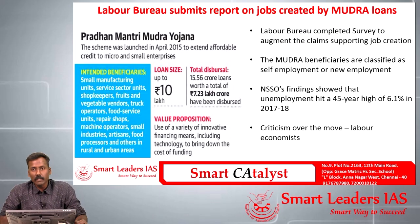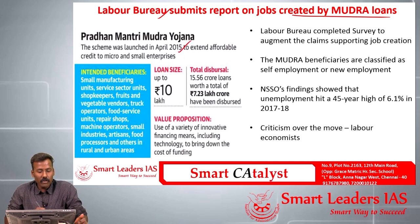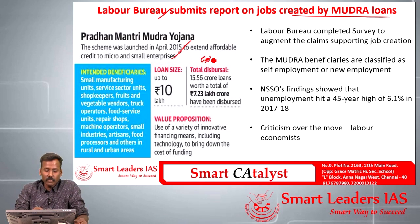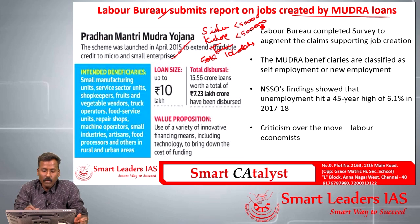The fifth article is about a recent report submitted by the Labour Bureau on jobs created by Mudra loans. The Pradhan Mantri Mudra Yojana was launched in 2015 to extend affordable credit to micro and small enterprises. The loan size varied from 50,000 to 10 lakhs under three classifications: Shishu (below 50,000), Kishor (50,000 to 5 lakhs), and Tarun (5 lakhs to 10 lakhs).